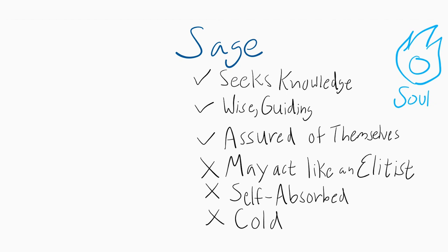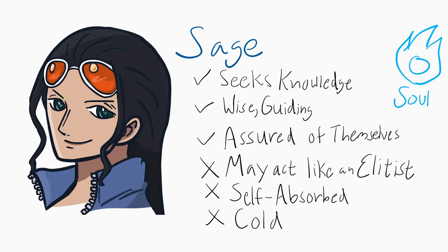Next is Sage. My example is Nico Robin from One Piece. Of course, I had to give this to the archaeologist of the Straw Hat Pirates, and to a character whose dream is to find the Rio Poneglyph. Additionally, you'll see characteristics listed on the side. Sometimes the examples we use don't always represent the positives and the negatives — that's something to keep in mind when we get to later examples.